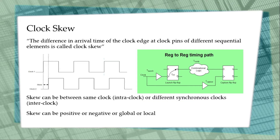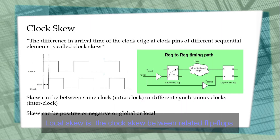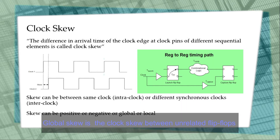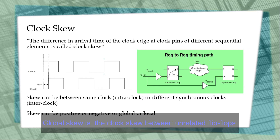There are also cases where clock skew is defined as global and local. Local clock skew refers to sequential elements within the same block, sub-block, or domain. Global clock skew refers to skew between two large blocks of the chip. Global clock skew is not considered as critical.